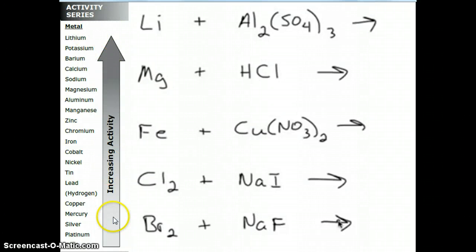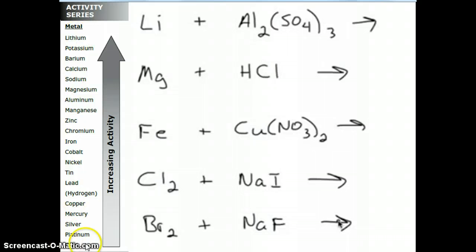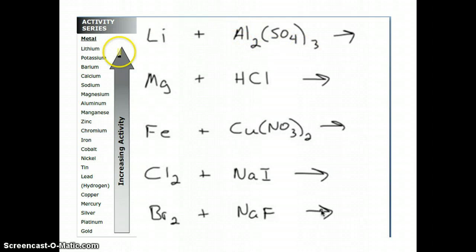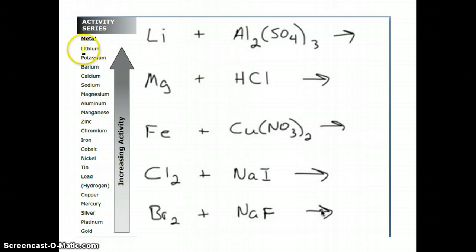You'll notice that the activity series is in increasing activity. The metals at the top are more active or more reactive than the metals at the bottom. So if I ask you on an exam whether a reaction will occur — for example, lithium and aluminum sulfate — is this lithium going to come in and replace this aluminum? What you need to do is come over to the activity series and look for lithium, which is highlighted up at the top as one of the most active or reactive metals.